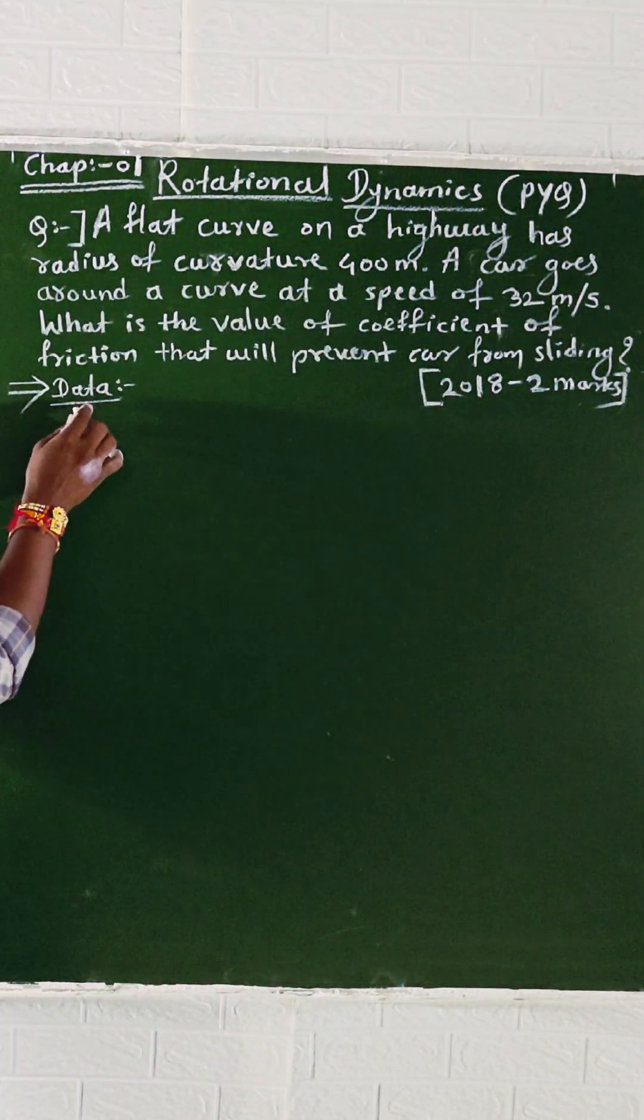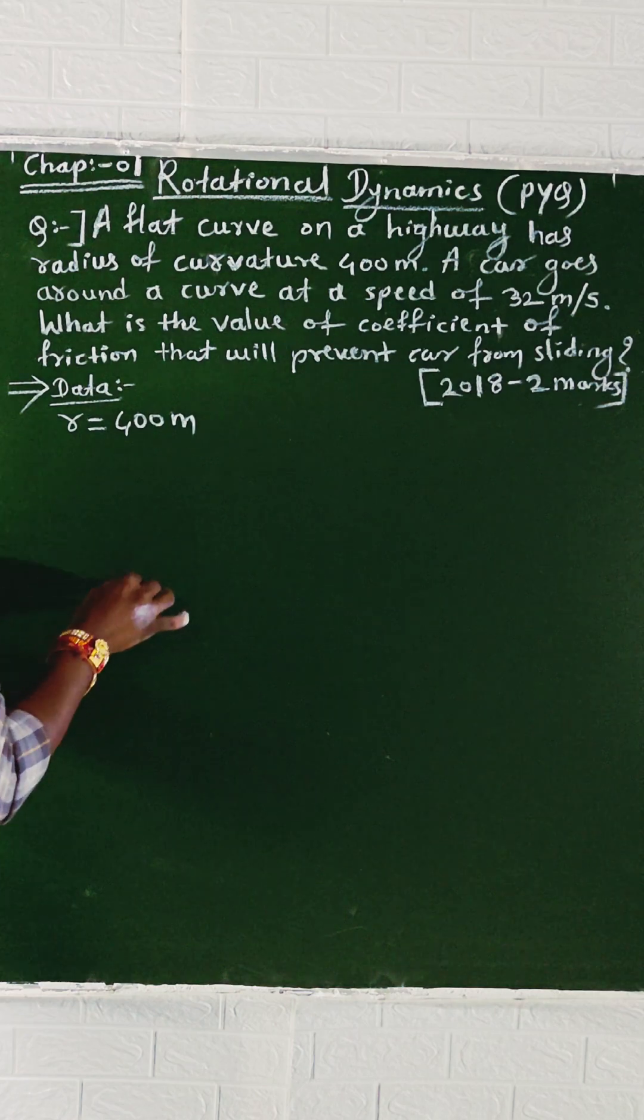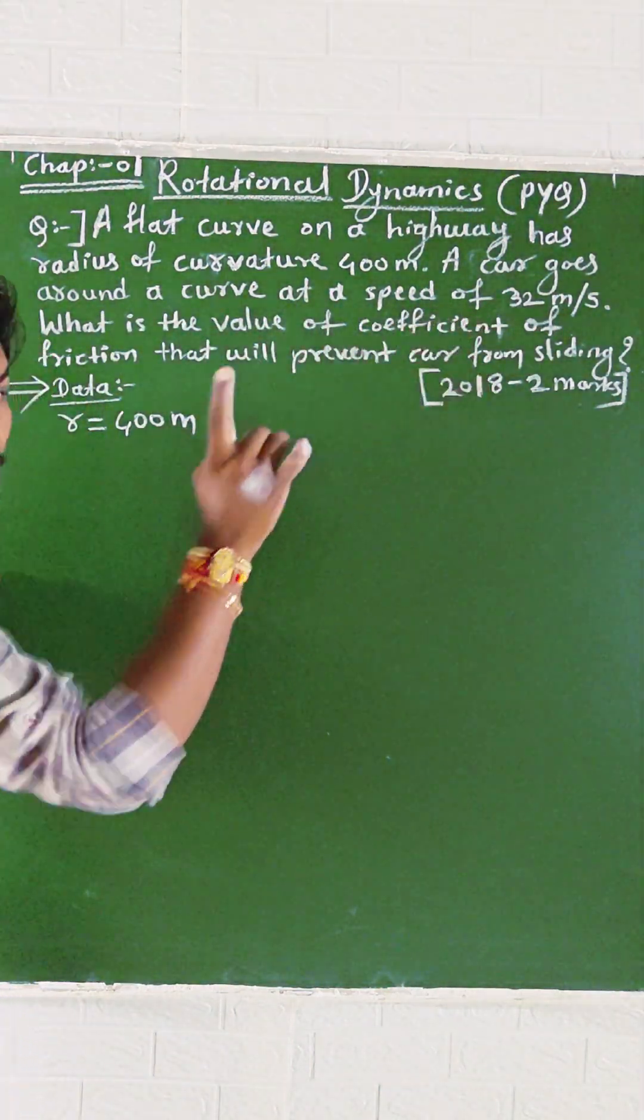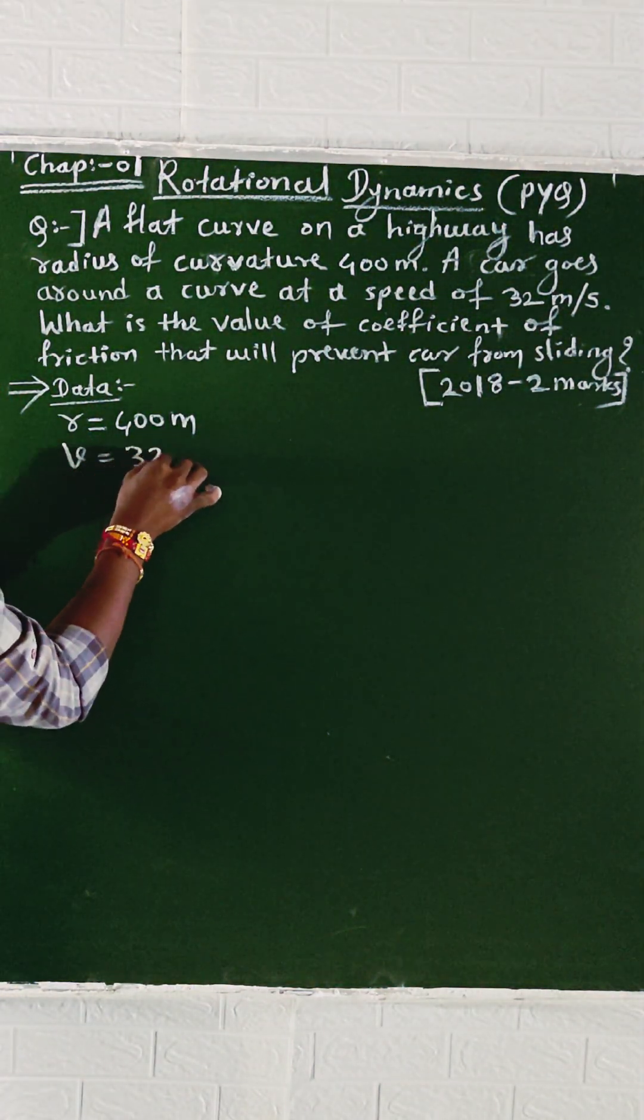In the data, the radius of curvature R is equal to 400 meters. The car goes around the curve at speed V equal to 32 meters per second.